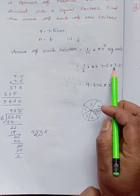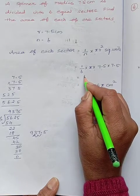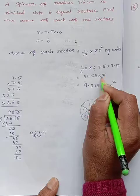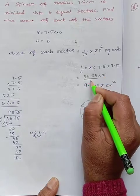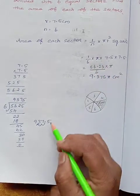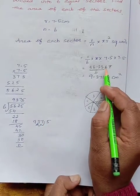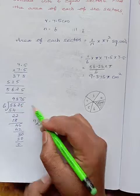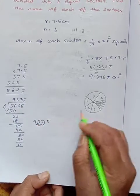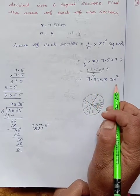6 divides 56.25 into pi divided by 6. Dividing by 6 gives 937.5. Since the decimal point is before two numbers, from this point we move two places. So your answer is 9.375 square centimeters.